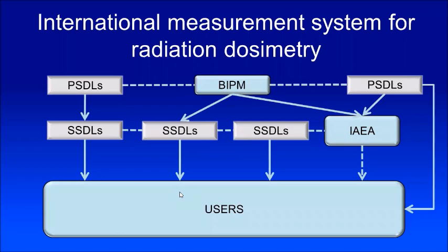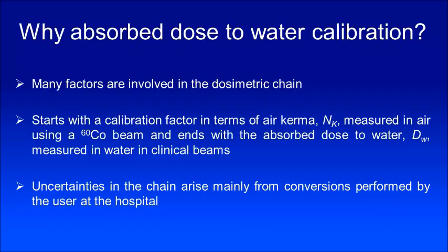This flowchart explains the traceability to the primary standard at the international level. For example, you are the user — you would have calibrated either in an SSDL or at the IAEA. The SSDL would have calibrated with a PSDL, the BIPM, or another primary standard. If your country has a primary standard laboratory, you could also directly calibrate there. The IAEA, primary standard, and secondary standard all have a network and verify dosimeters with each other — so you have traceability.